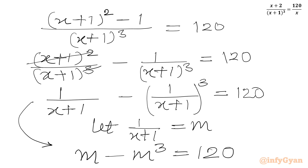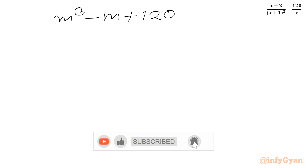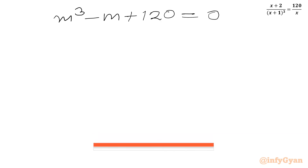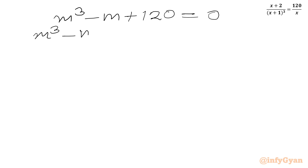This is a cubic equation. Let's solve. We can write m³ − m + 120 equal to 0, taking all terms to the RHS. Now we can split 120 as 125 − 5, giving us m³ − m + 125 − 5 equal to 0.